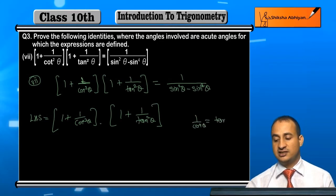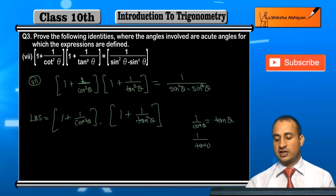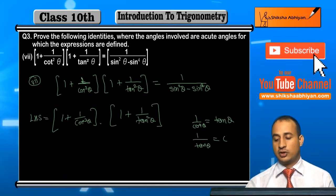This is equal to tan θ. Similarly, 1 upon tan θ is nothing but cot θ.